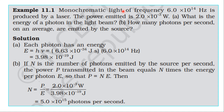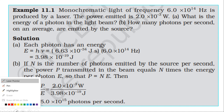Example 11.1: Monochromatic light of frequency 6×10¹⁴ Hz is produced by a laser. The power emitted is 2×10⁻³ watt. First question: what is the energy of a photon in the light beam? Second question: how many photons per second on average are emitted by the source?